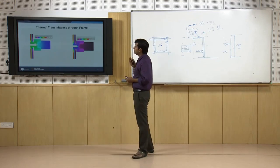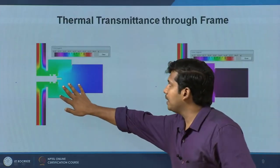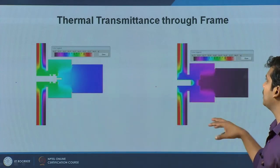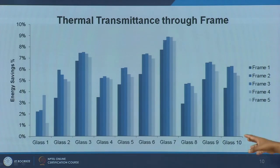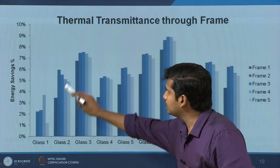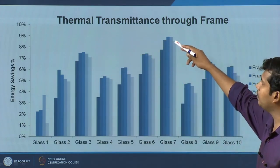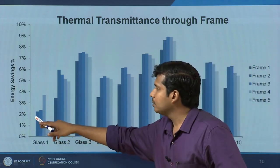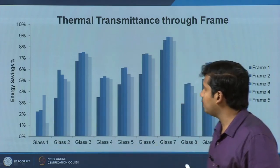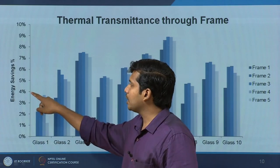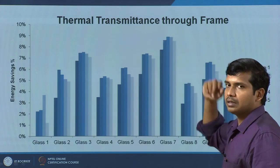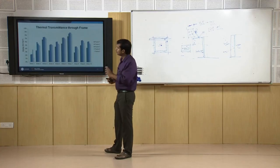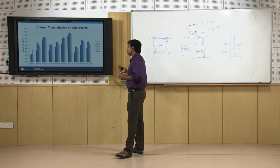To give a better picture, two different frame systems were compared. Heat transfer through one frame is relatively higher than the other. Looking at 10 different glasses and 5 different frames, the amount of energy saving varied significantly. With an efficient glass you get about 8 to 9 percent saving, whereas with a less efficient glass you get around 1 to 2 percent saving. Even with a less efficient glass, choosing an efficient frame can get you up to 4 percent energy saving. Conversely, even with good glass, a poor frame can cost you 1.5 to 2 percent of estimated energy savings. The frame has a crucial role in overall system energy efficiency.